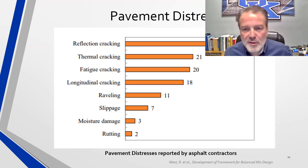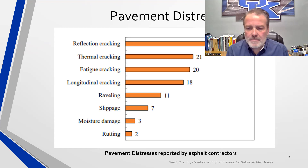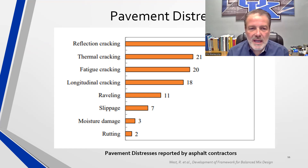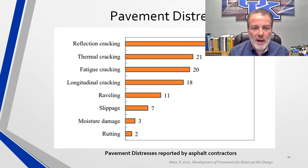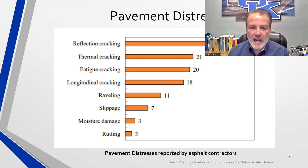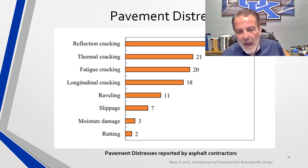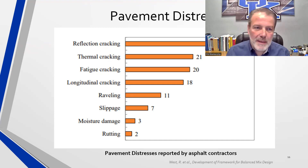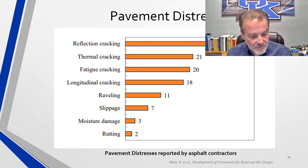An NCAT survey on developing the balanced mix design framework — with Randy West as lead author — reported that reflection cracking, thermal cracking, fatigue cracking, longitudinal cracking, and raveling were the top distresses. The word that keeps repeating is cracking, cracking, cracking. That's followed by raveling, slippage, moisture damage, and rutting.